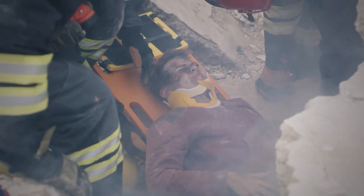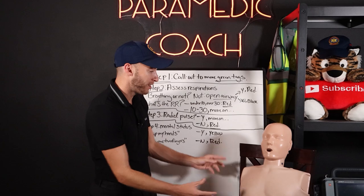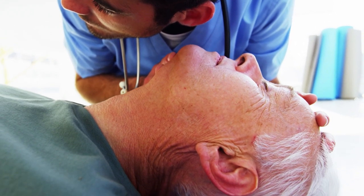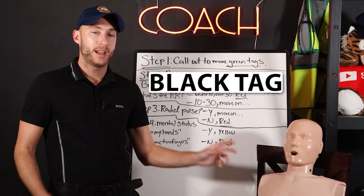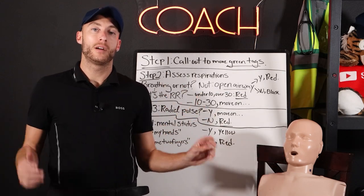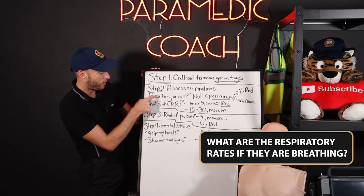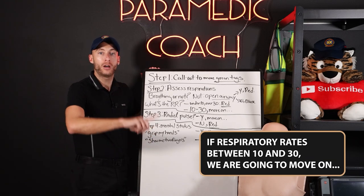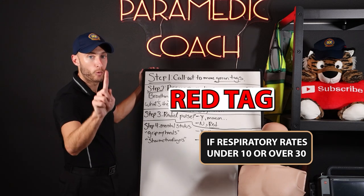Approaching a patient who is unable to walk, the first thing I'm going to do is assess respiratory status. Is the patient breathing? If not, we open the airway. If after opening the airway they still aren't breathing, black tag. If they start to spontaneously breathe once the airway is opened, red tag. If they are breathing, what's the respiratory rate? If it's between 10 and 30, we move on. If it's under 10 or above 30 — breathing too slow or too fast — we tag them red.